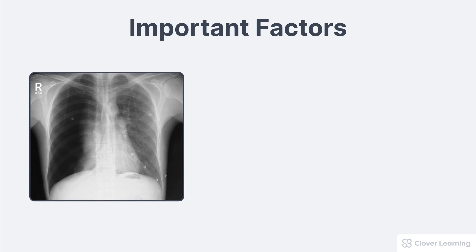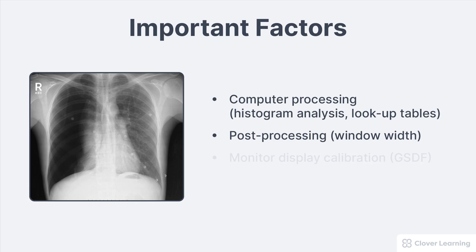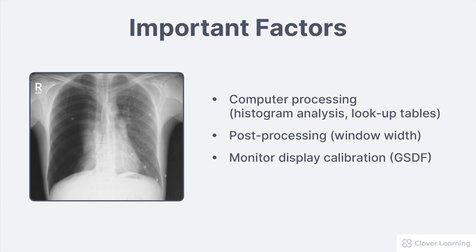The most important factors controlling image contrast are computer processing like histogram analysis and lookup tables, post processing like adjusting the window width, and monitor display calibration called the grayscale standard display function or GSDF. If any of these factors are wrong, the image contrast can be significantly degraded.